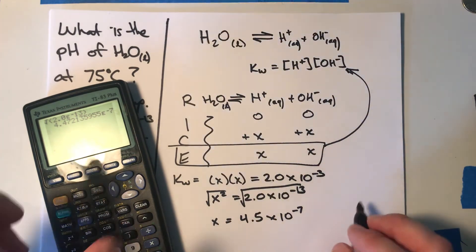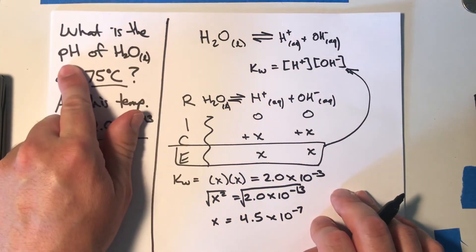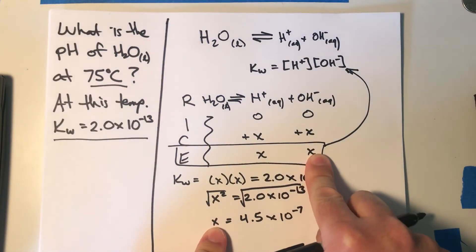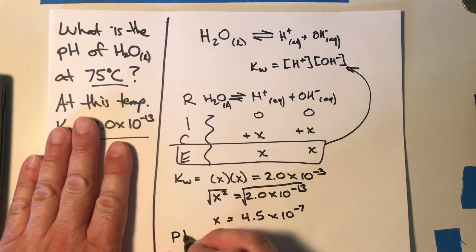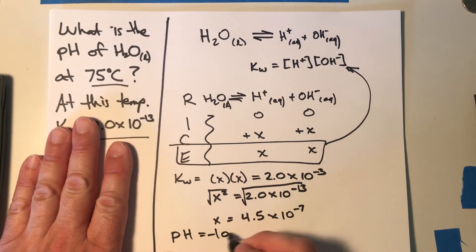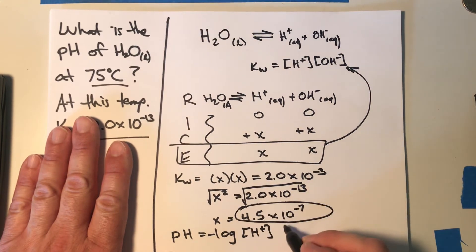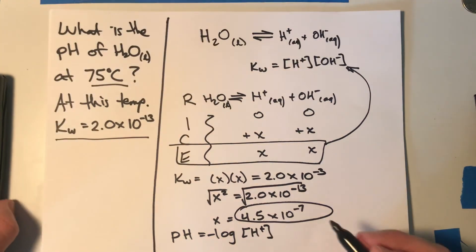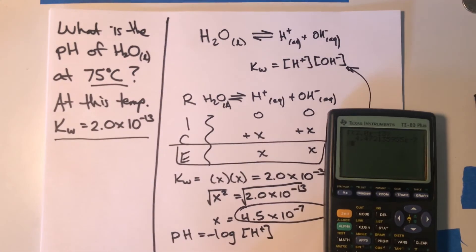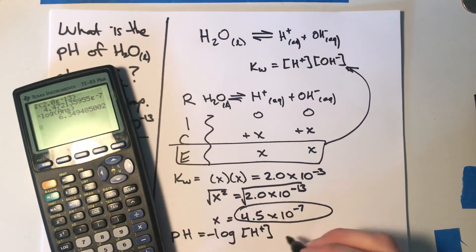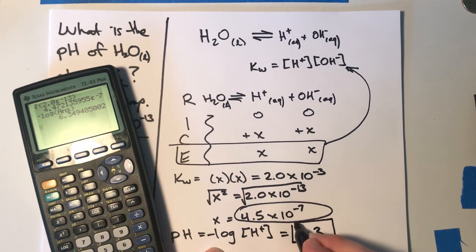What we were actually asked for is the pH. The x value equals both our H+ and our OH− concentration. The pH equation is the negative log of the hydrogen ion concentration, so we take the negative log of 4.5 × 10⁻⁷, and that gives us a pH of 6.3. So the pH of pure water at this temperature is 6.3.